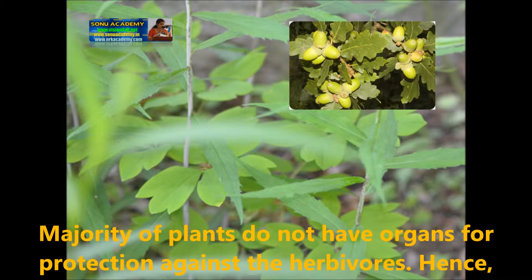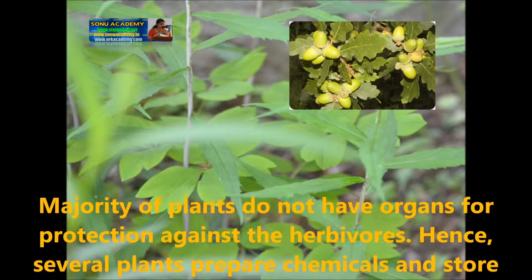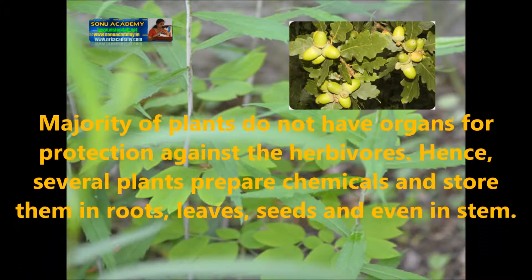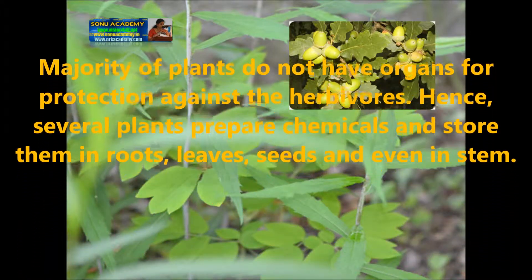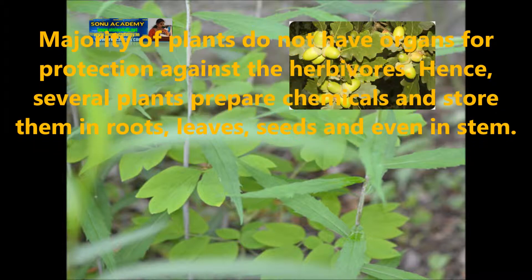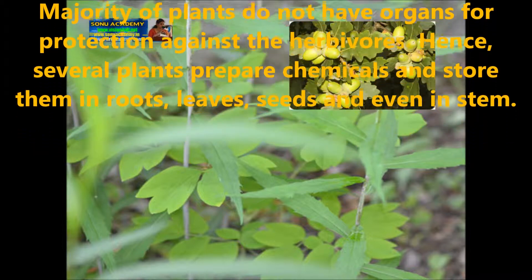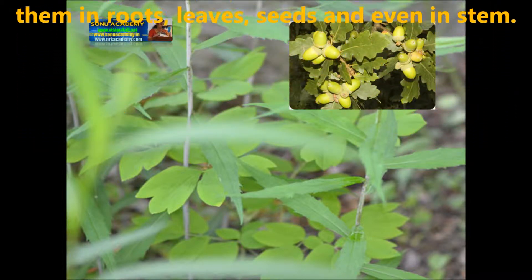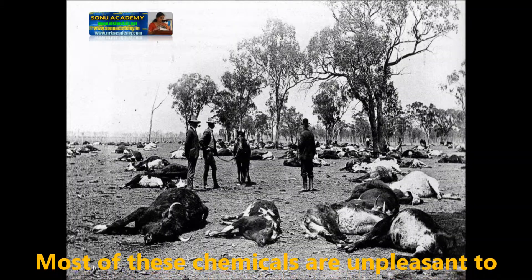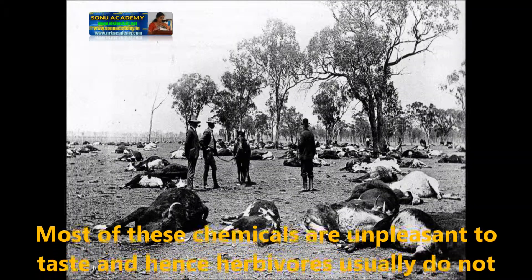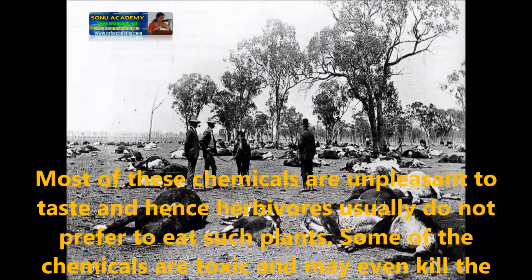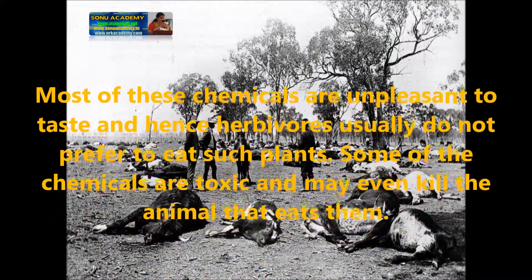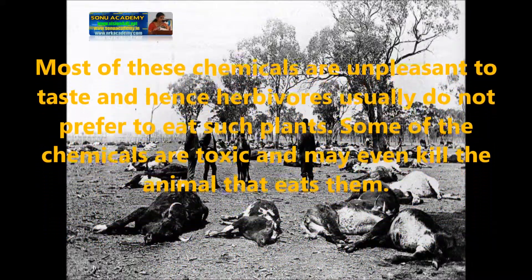Majority of plants do not have organs for protection against herbivores. Hence, several plants prepare chemicals and store them in their roots, leaves, seeds and even in the stem. Most of these chemicals are unpleasant to taste, and hence herbivores usually do not prefer to eat such plants.